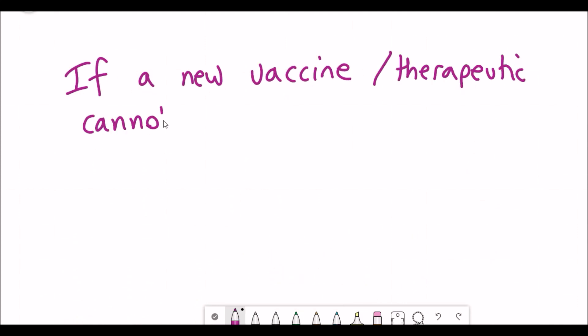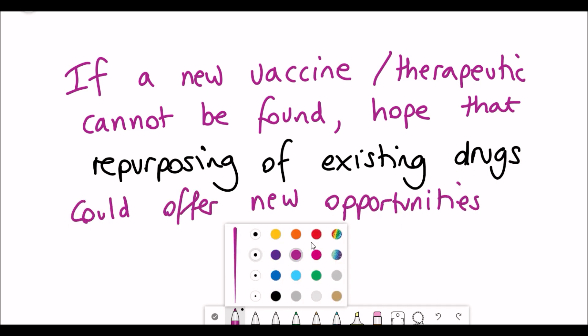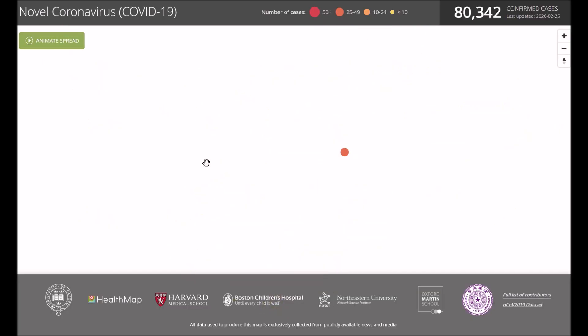So will we be able to find a new vaccine? Maybe, maybe not. But there's also potential hope that instead of finding a new vaccine, we could repurpose existing drugs that could try and target this spike protein ACE2 receptor interaction, which could hopefully offer new opportunities to prevent the spread that we have seen, starting from Wuhan, China, to amongst other regions in China and across the globe.